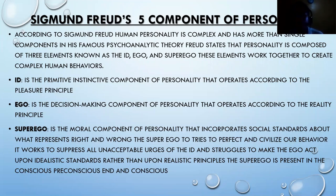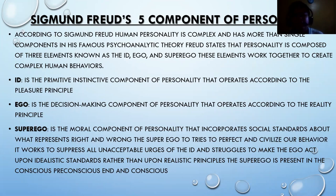According to Sigmund Freud, human personality is complex and has more than one component. In his famous psychoanalytic theory, Freud states that personality is composed of three elements known as the Id, Ego, and Superego. These elements work together to create complex human behavior. The Id is the primitive and instinctive component of personality that operates according to the pleasure principle.